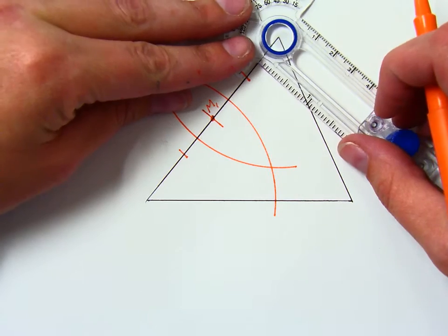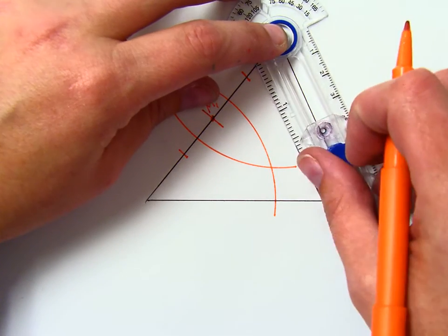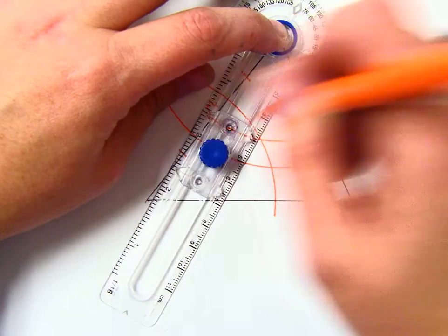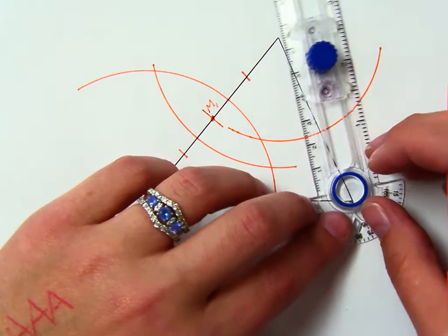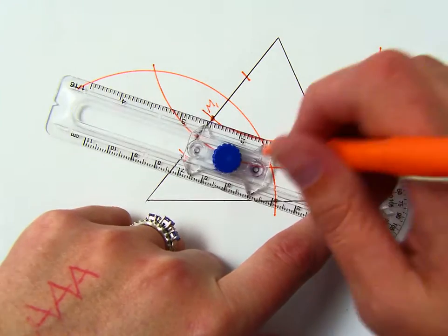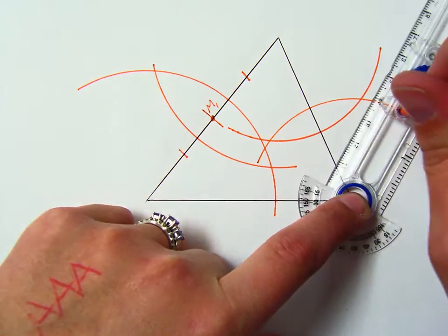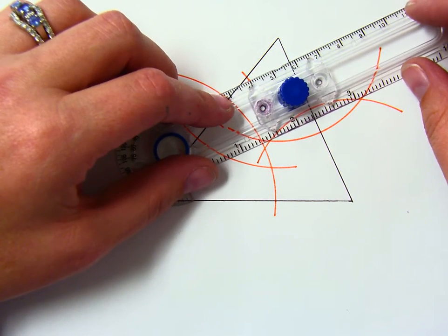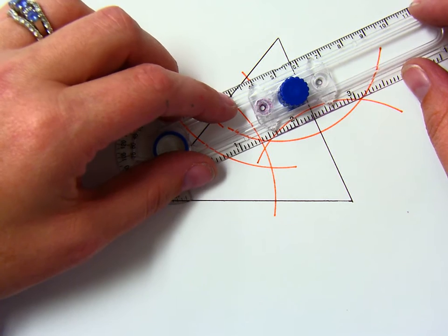So again, open your compass more than half. Make an arc. Turn around to the other end point of that segment. Without changing the radius, you're going to make another arc. You've now created your football where the two ends are, or the X's of the football are.